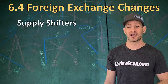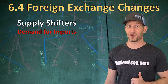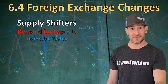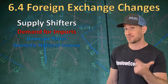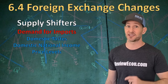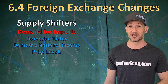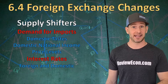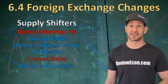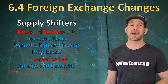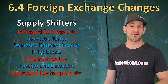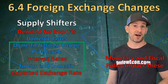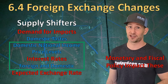Now, the supply of currency within the international markets comes from the following. First of all, we've got demand for imports — if Americans buy more imports, they are going to supply more U.S. dollars. With that, we have the domestic taste for foreign made goods, domestic national income, and price levels, which change the relative expense of buying foreign or domestic goods. Just like with demand, we have interest rates that will impact the supply of currency as well, because if I want to save my money in a foreign bank, I'm going to have to buy that foreign currency and supply U.S. dollars. And just like with demand, we have the expected future foreign exchange rate as a shifter of the supply curve. Note that these factors are impacted by monetary and fiscal policy as well, so monetary and fiscal policy can shift both the demand curve and the supply curve within foreign exchange markets.